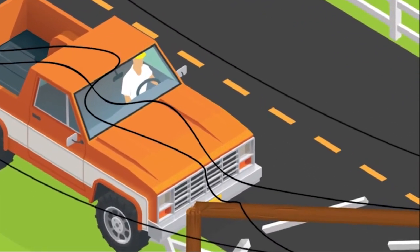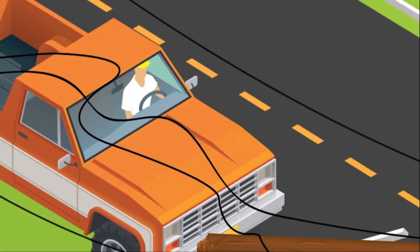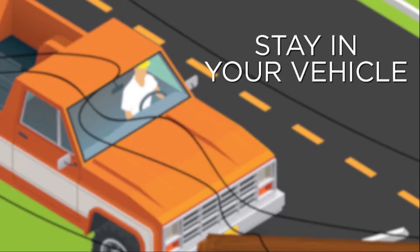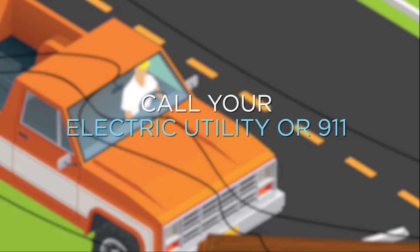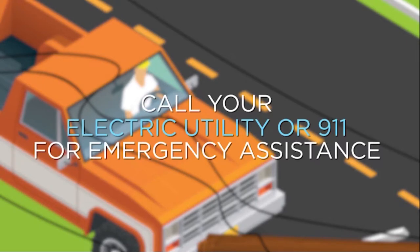If your car hits a utility pole and brings down a power line, stay in your vehicle and wait until help arrives and power lines have been de-energized. Call your electric utility or 911 for emergency assistance.